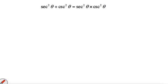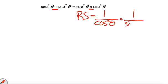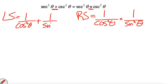Now looking at this one, I think the left side is harder because a plus I always find is harder than a times, but I'm going to quickly change the right side to 1 over cos squared theta times 1 over sine squared theta. Now let's look at the left side. Left side, we've got 1 over cos squared theta plus 1 over sine squared theta.